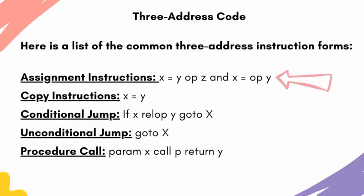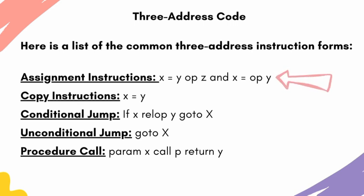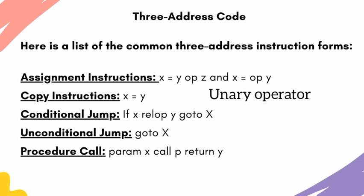Assignment instructions take the form x equals y op z for binary operations, or x equals op y for unary operations. For example, a unary minus or negation operator has the form x equals op y. These cover the main binary and unary assignment cases.